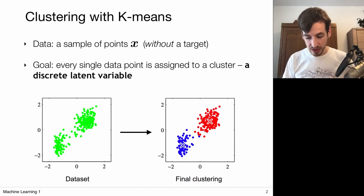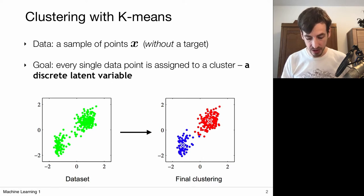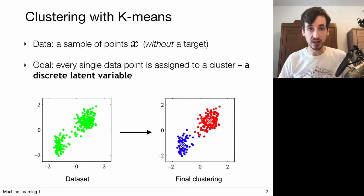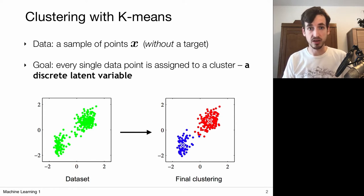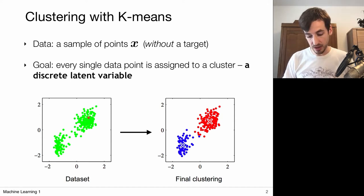In unsupervised learning, we're considering data points without targets — just observations x. This could be visualized as follows: suppose we have these 2D measurements, which result in these green point clouds. We're going to assume there's a discrete latent variable that encodes for the cluster or latent class, which we do not observe, but which is responsible for observing data points in two clusters. We're set out to recover this latent variable.